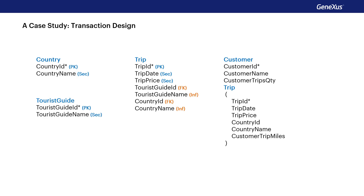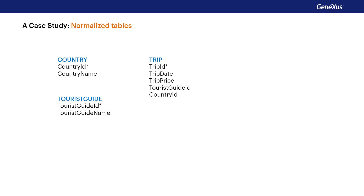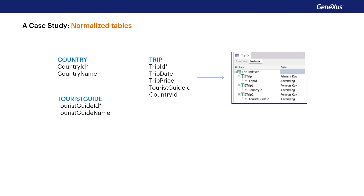We already know that inferred attributes are not stored because GeneXus gets their value from the corresponding foreign keys. So, what will be the structure of the table associated with the trip transaction? Its primary key TripID, and the attributes TripDate, TripPrice, TouristGuideID, and CountryID. As for indexes, GeneXus will create the primary index by TripID, and the foreign indexes by CountryID and TouristGuideID.